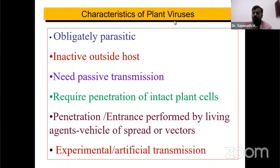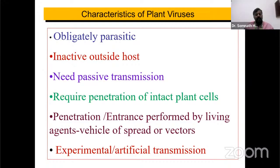Now the characteristics of plant viruses: they are obligately parasitic, meaning they require a living host to complete their entire life cycle. That's why we call viruses obligate pathogens or obligately parasitic. They are inactive outside the host because they need the living host to carry out their multiplication and development.